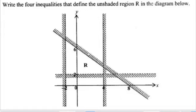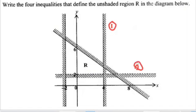This diagram is showing the four inequalities that define this unshaded region. So in order for us to answer or to describe these inequalities, let us first rename our lines. I'm going to pick the easiest one. We'll make this as our line one, this as our line two, this one as our line three, and this one as our line four.